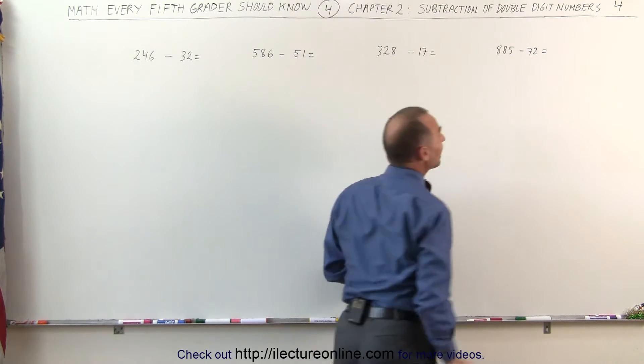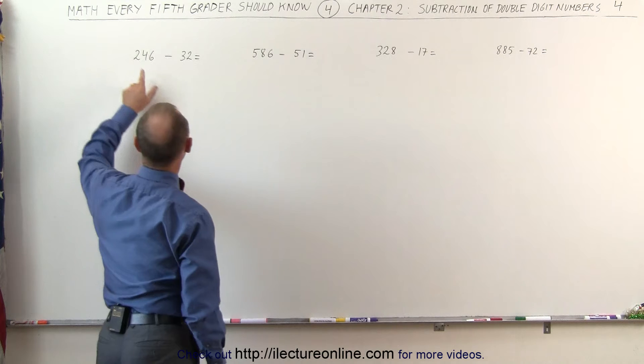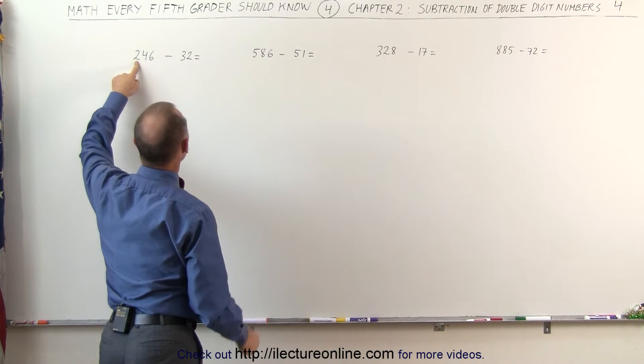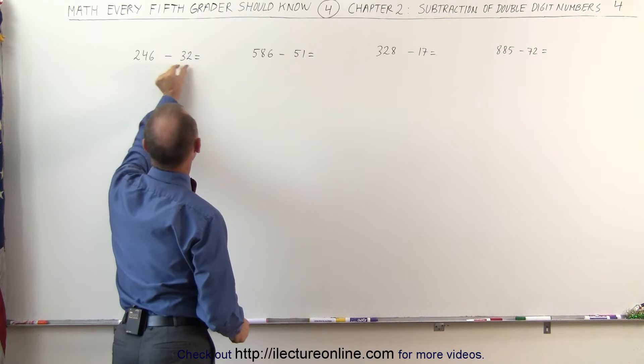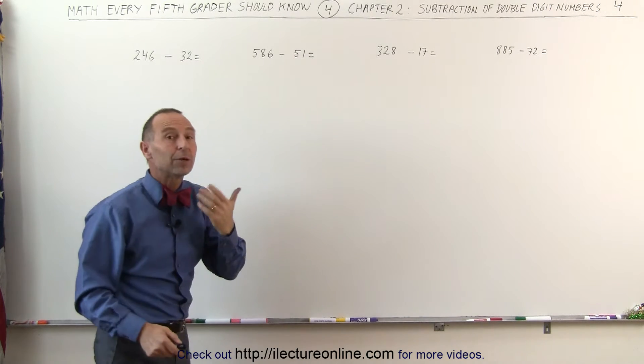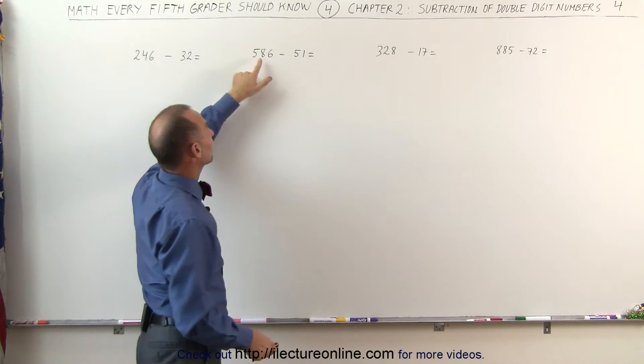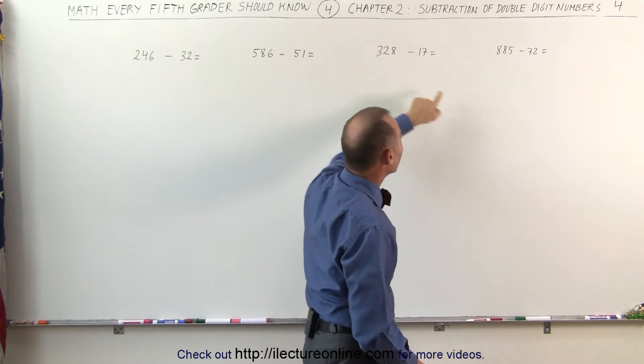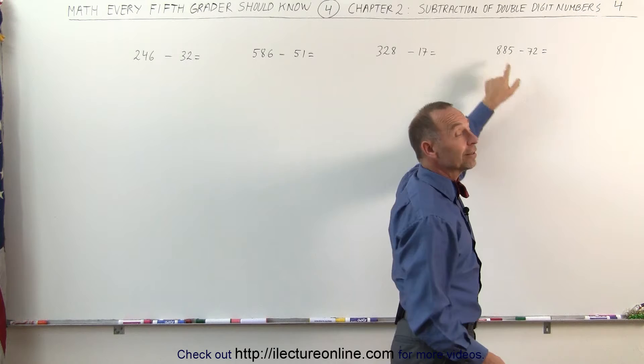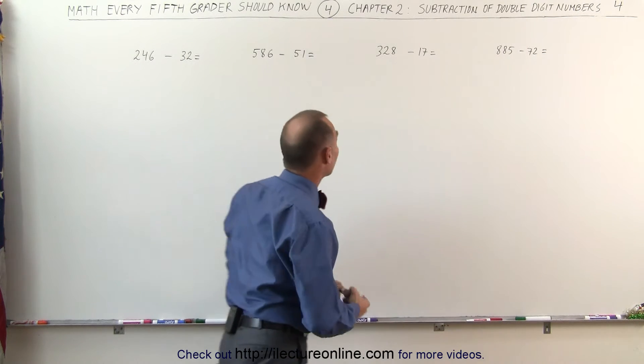Which means that the first number, the hundred-digit, will remain intact. When we subtract this from this, we still have a number greater than 200, still greater than 500, still greater than 300, and still greater than 800, so we don't have to change the first number.